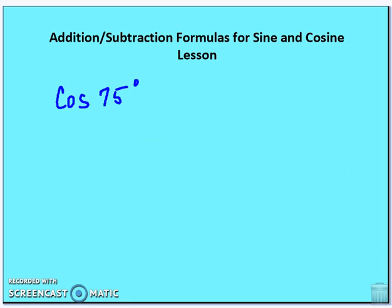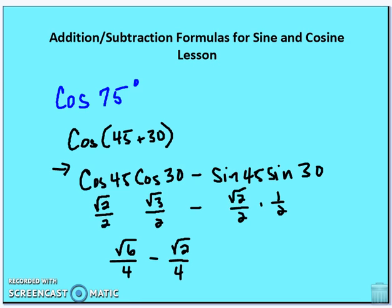Next: cosine 75°. You get cosine(45° + 30°) = cosine 45° · cosine 30° − sine 45° · sine 30°, which evaluates to (√6 − √2)/4.